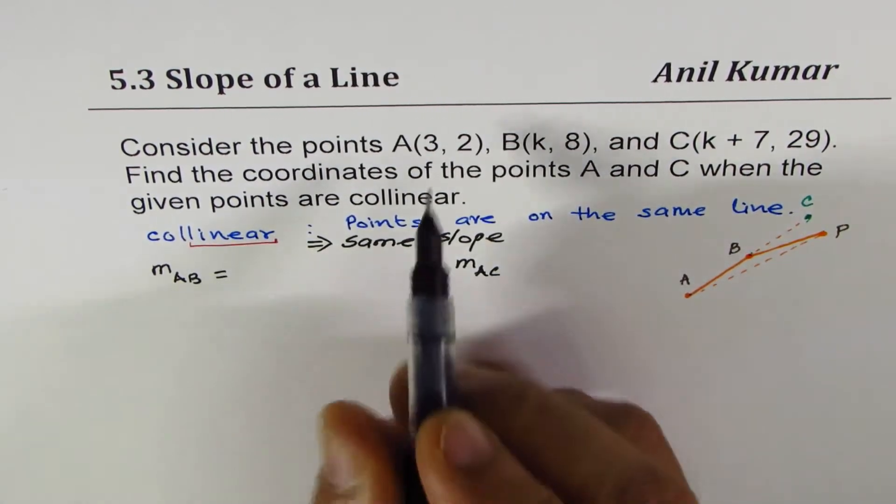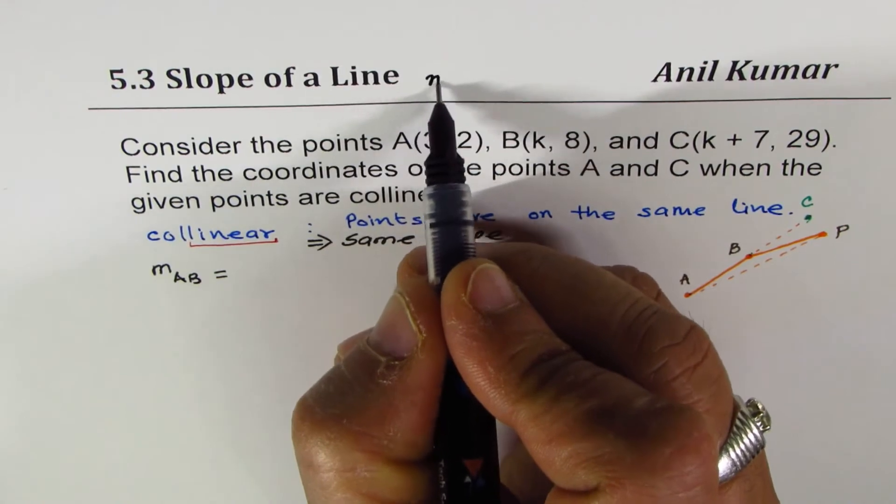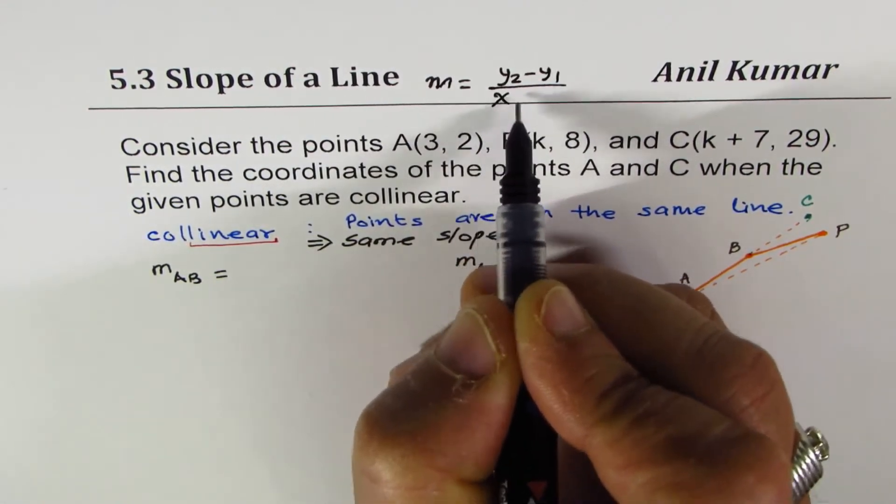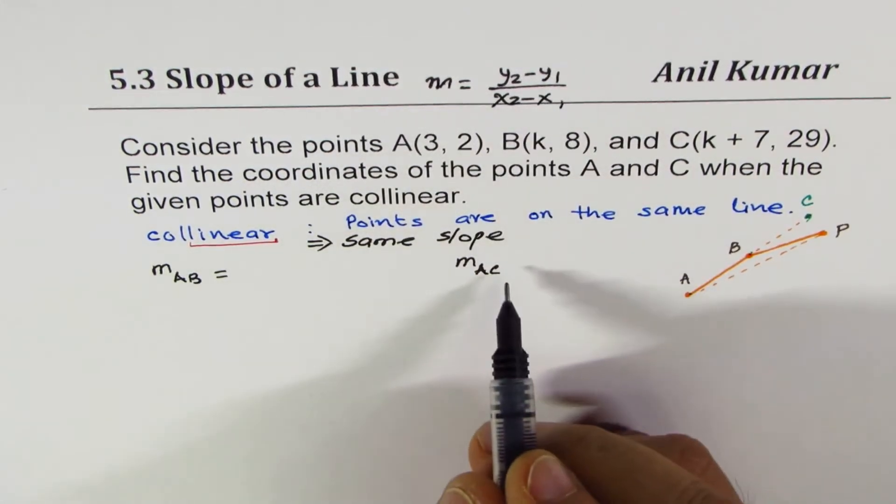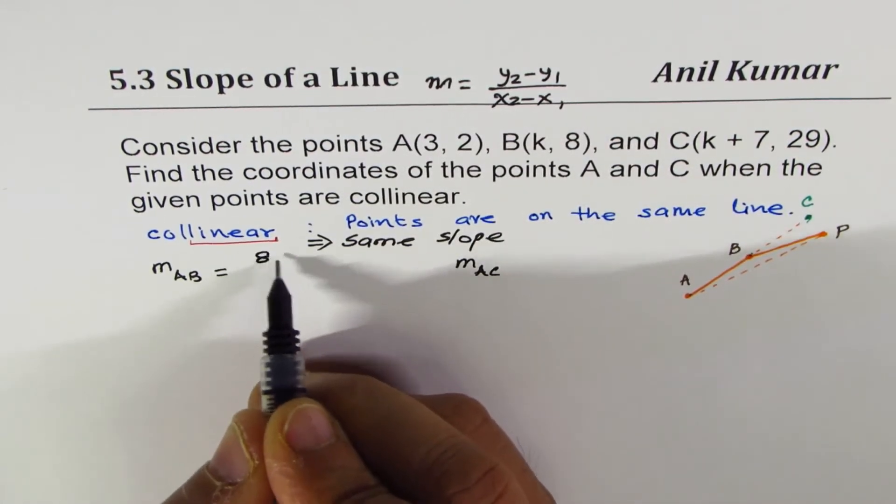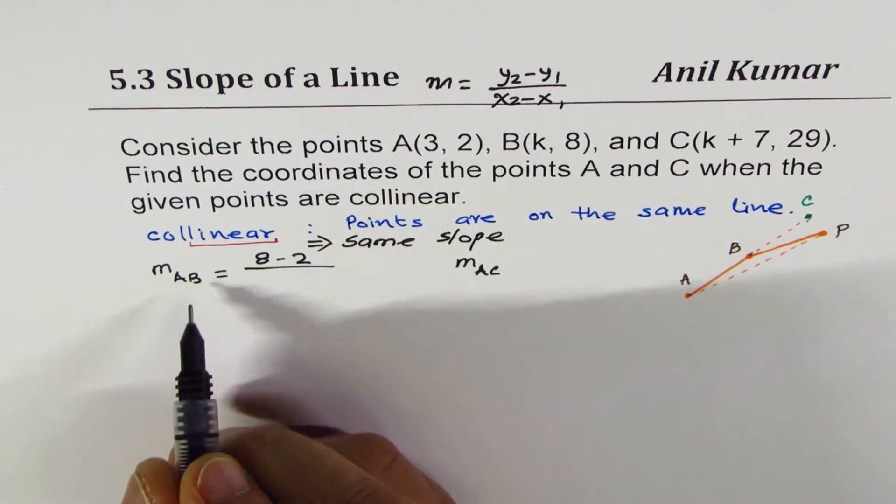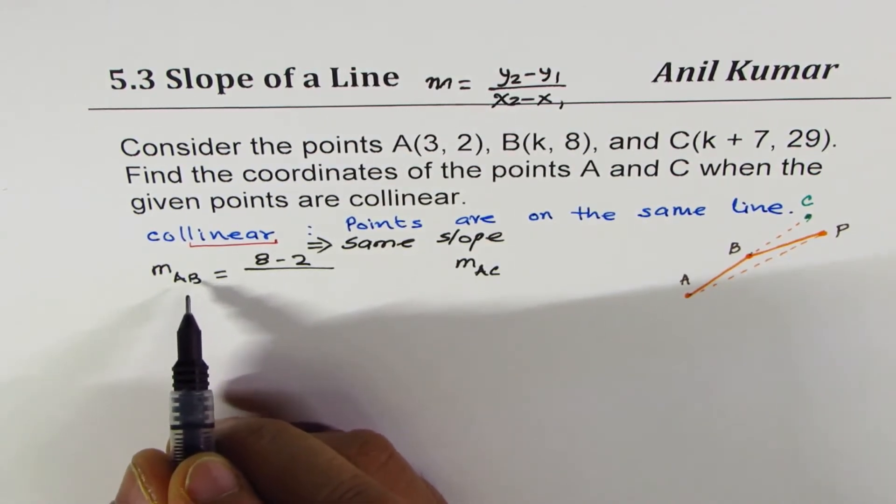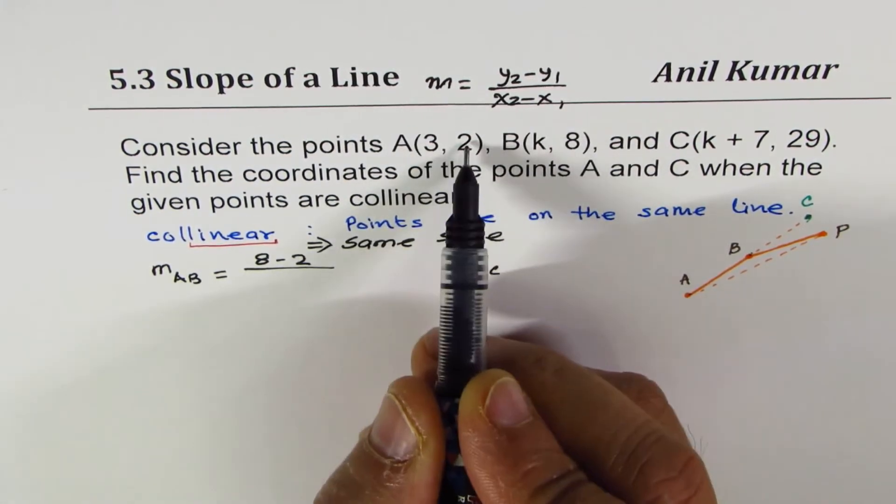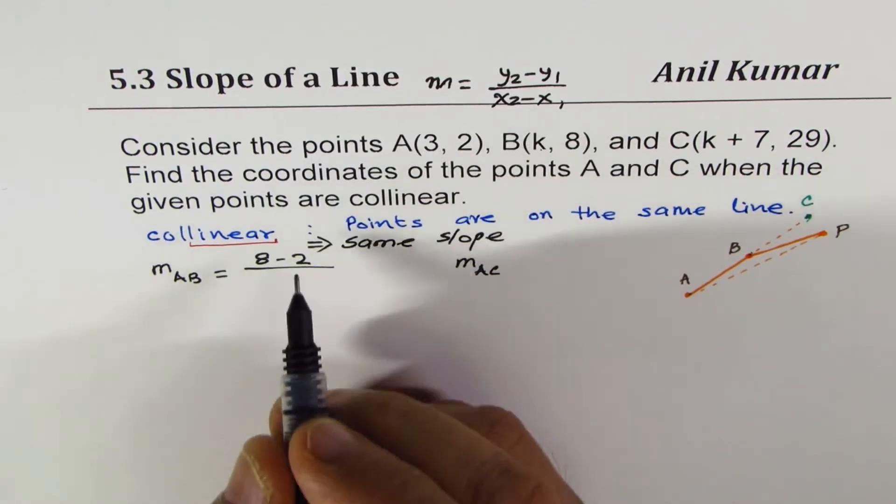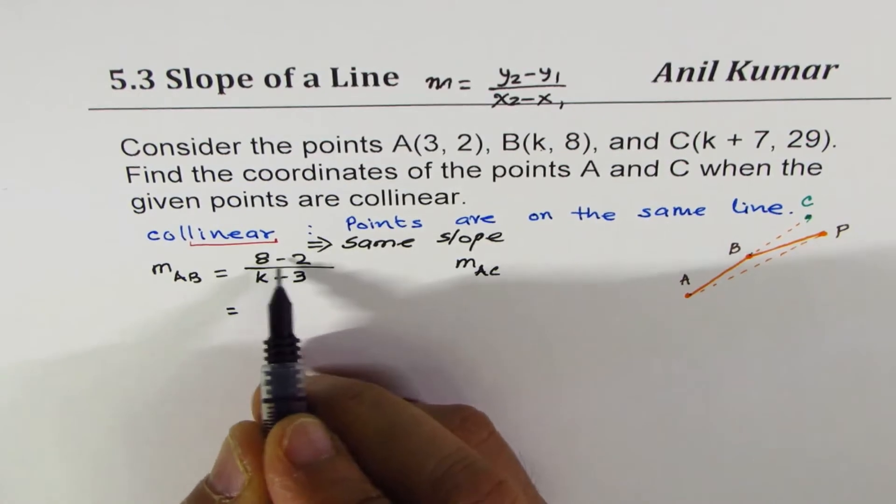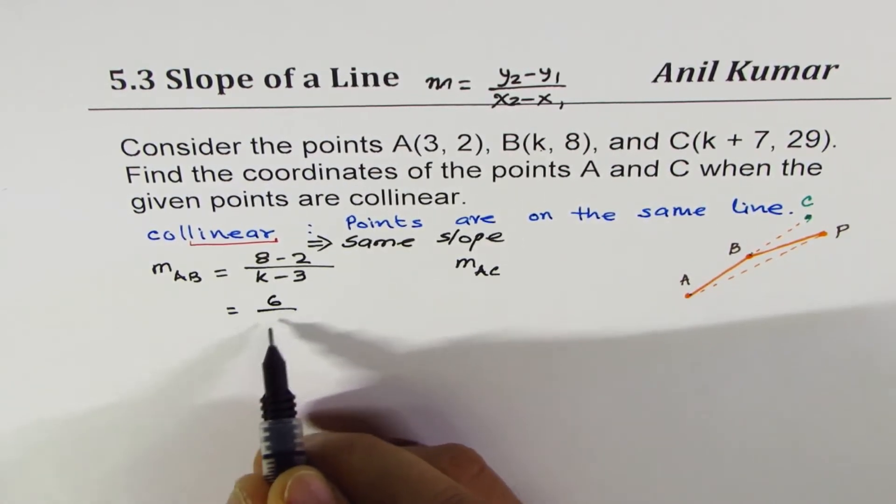What is the slope between A and B? The formula for slope, as you know, is m equals to change in Y divided by change in X. We'll use this formula to find the slope. A and B: 8 minus 2. When you write A and B, then A is the first point and B is the second point. A and B: 8 minus 2, Y2 minus Y1, divided by K minus 3, X2 minus X1. That gives you 8 minus 2 is 6 over K minus 3.